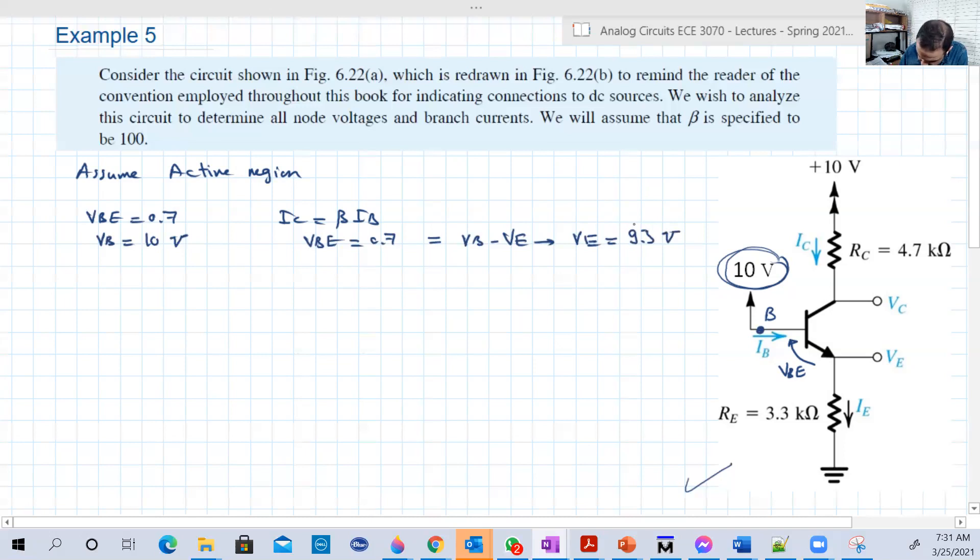Now IE equals VE, this point minus this point which is 0, over RE. So 9.3 over RE, 3.3 kilo ohms. This will give us 2.81 milliamperes. We know that IC equals beta over beta plus 1 times IE, or what we call alpha times IE, which is around 0.99 times 2.81 milliamperes. This is basically 2.79 milliamperes.